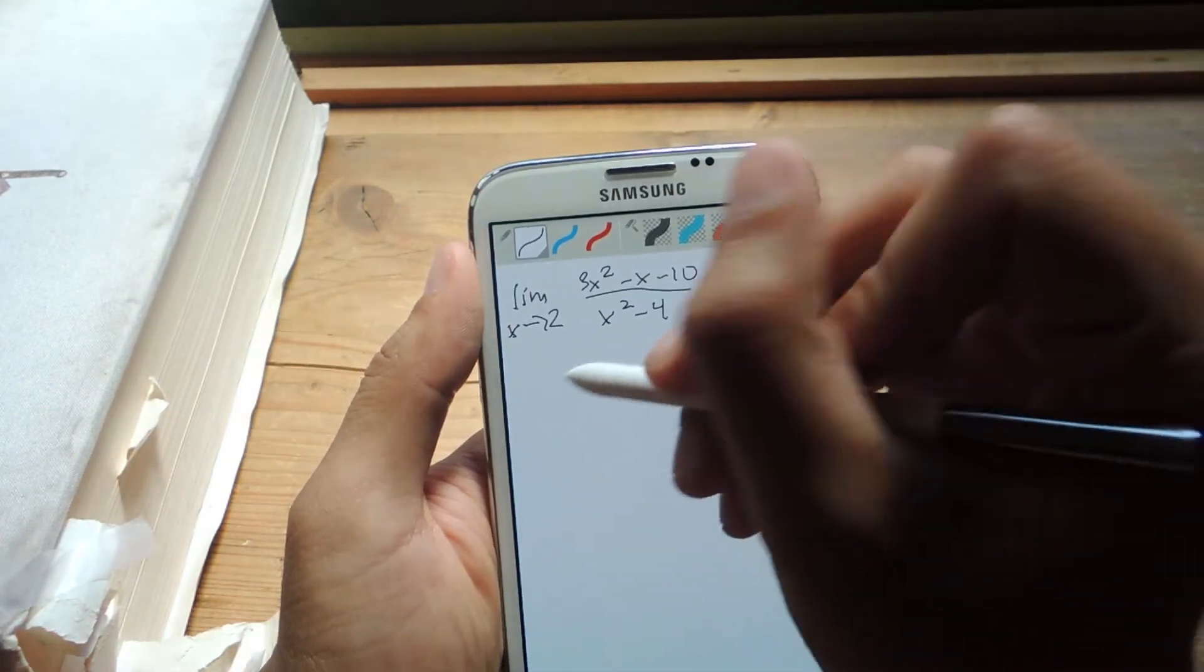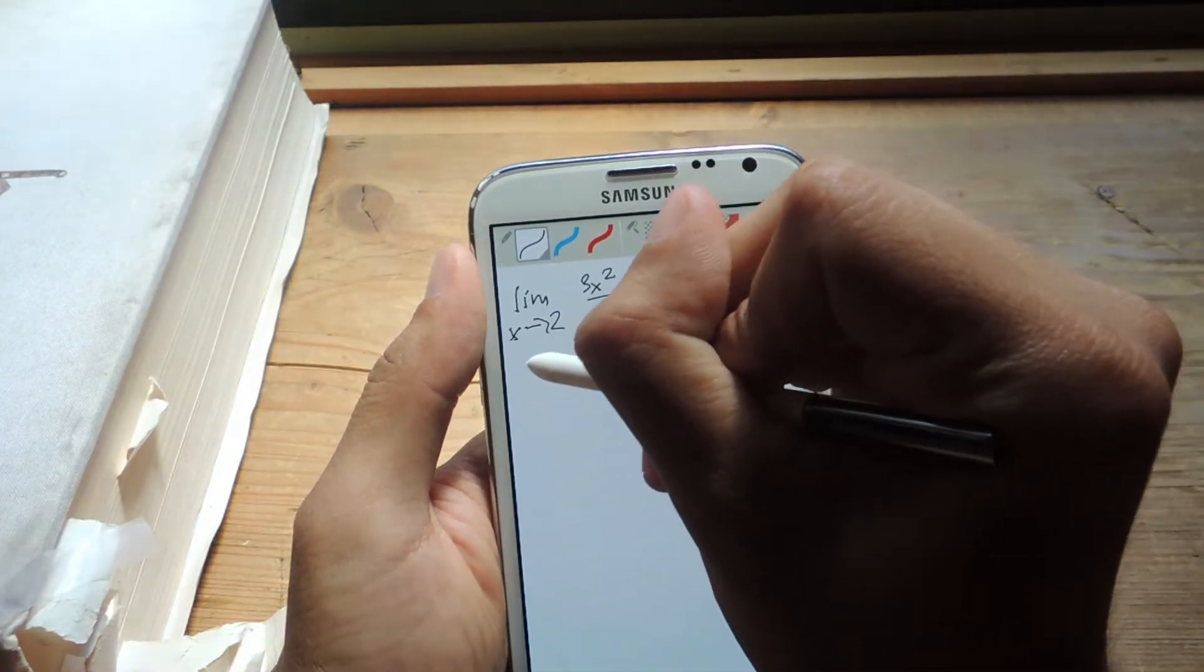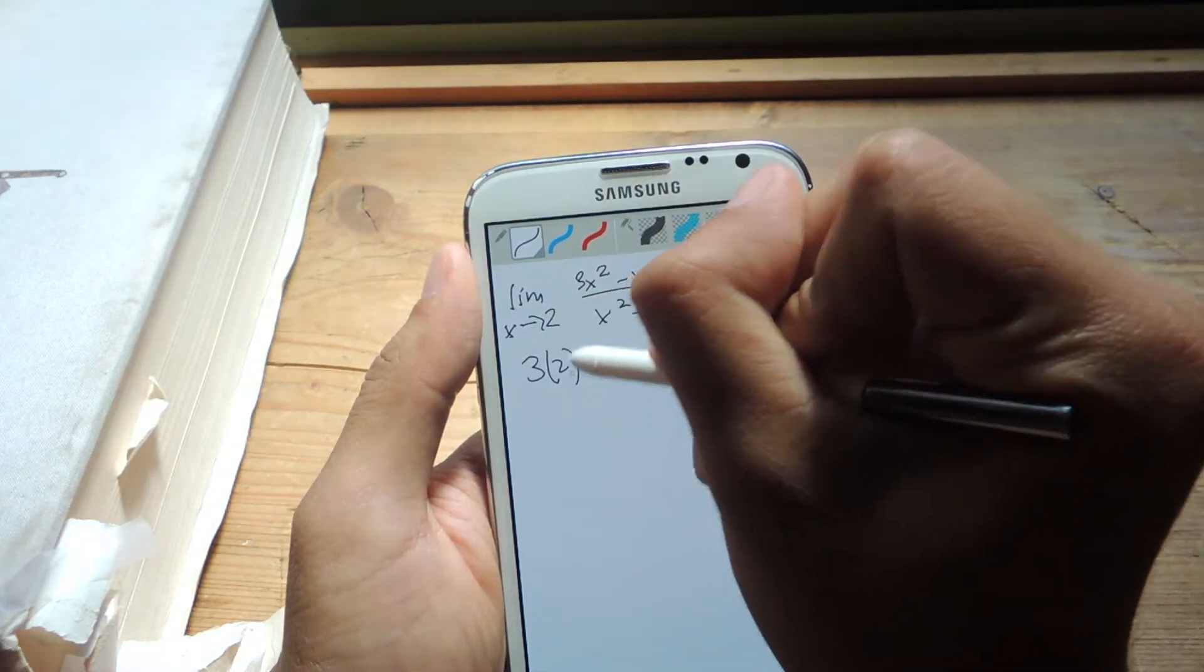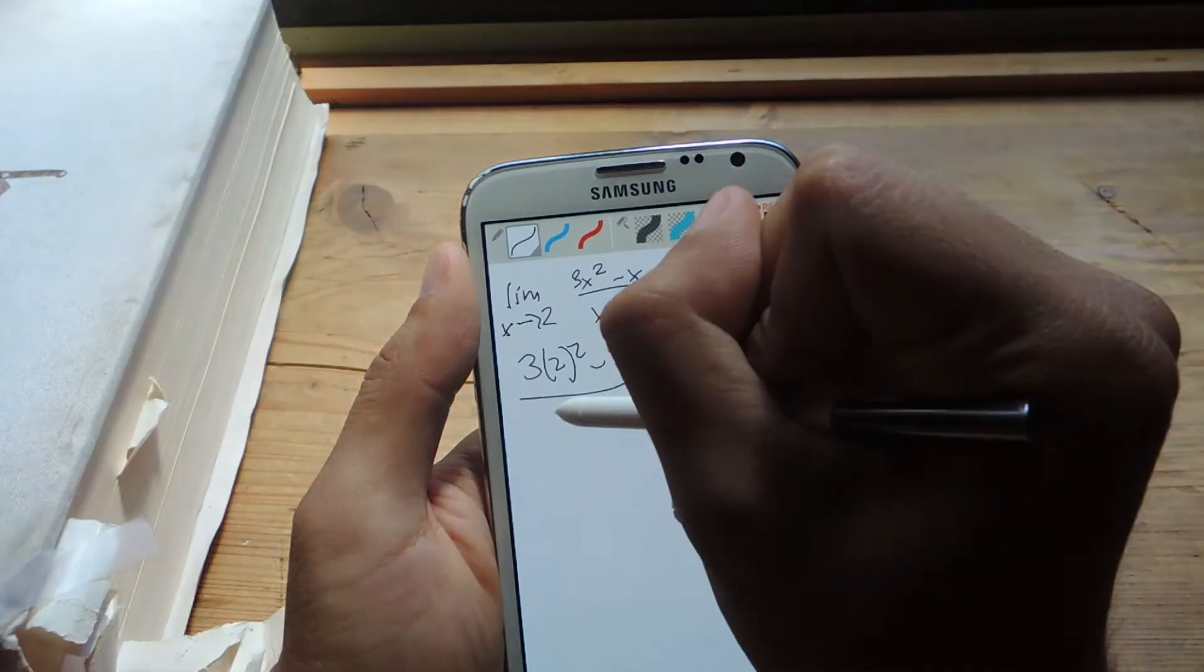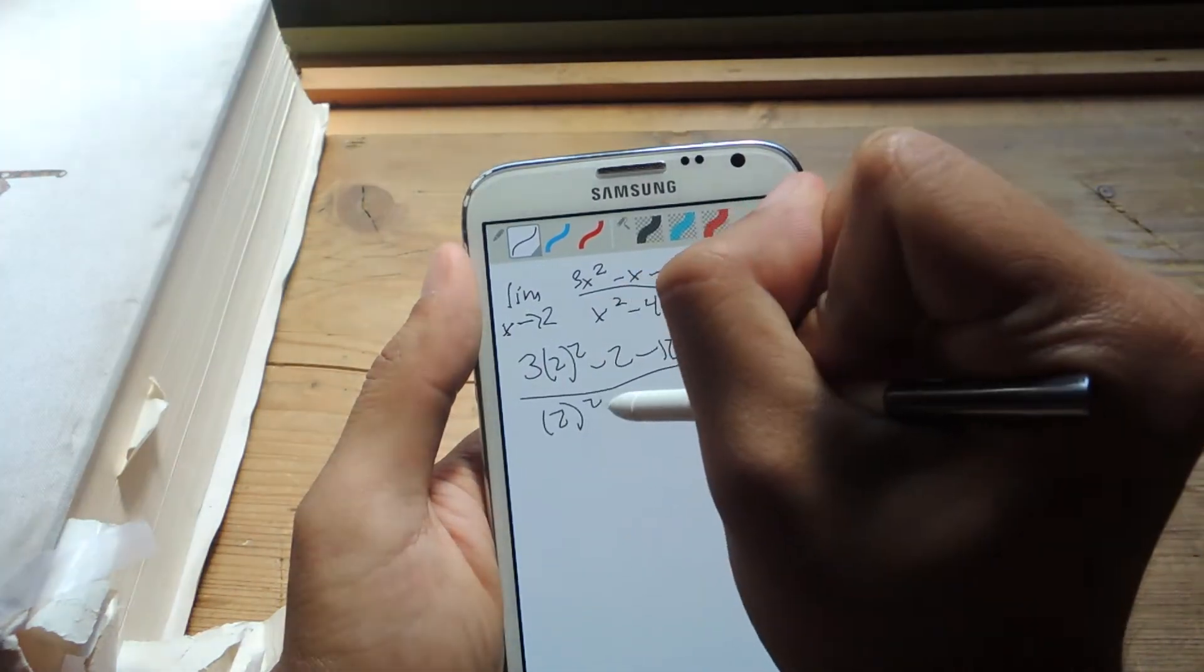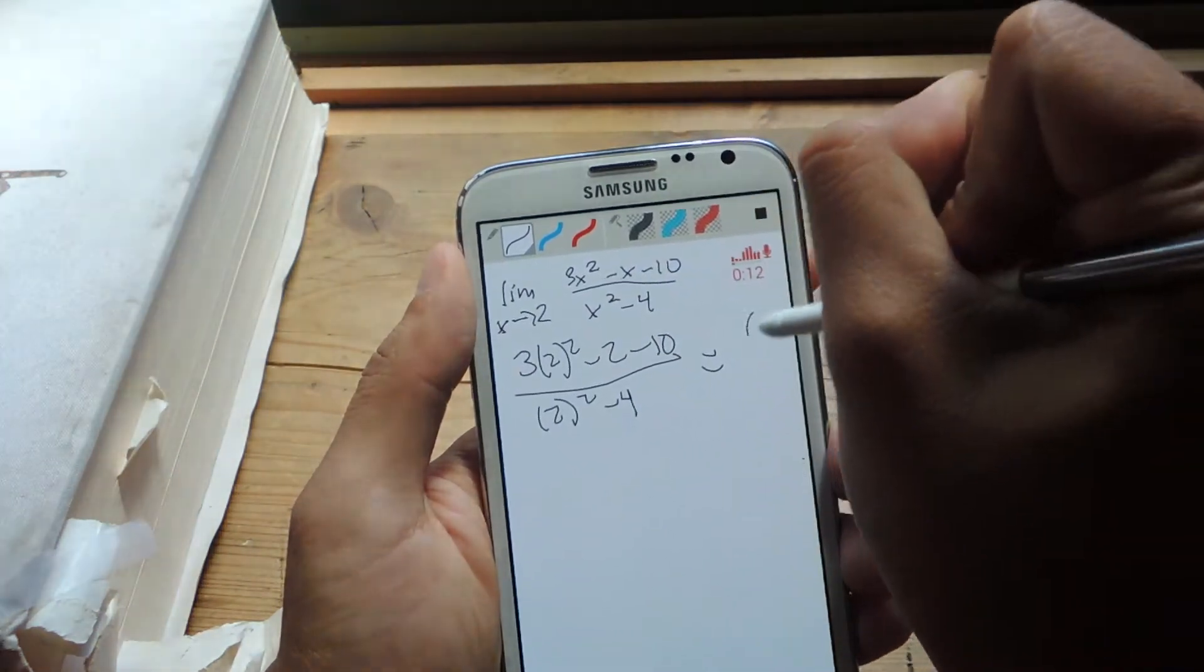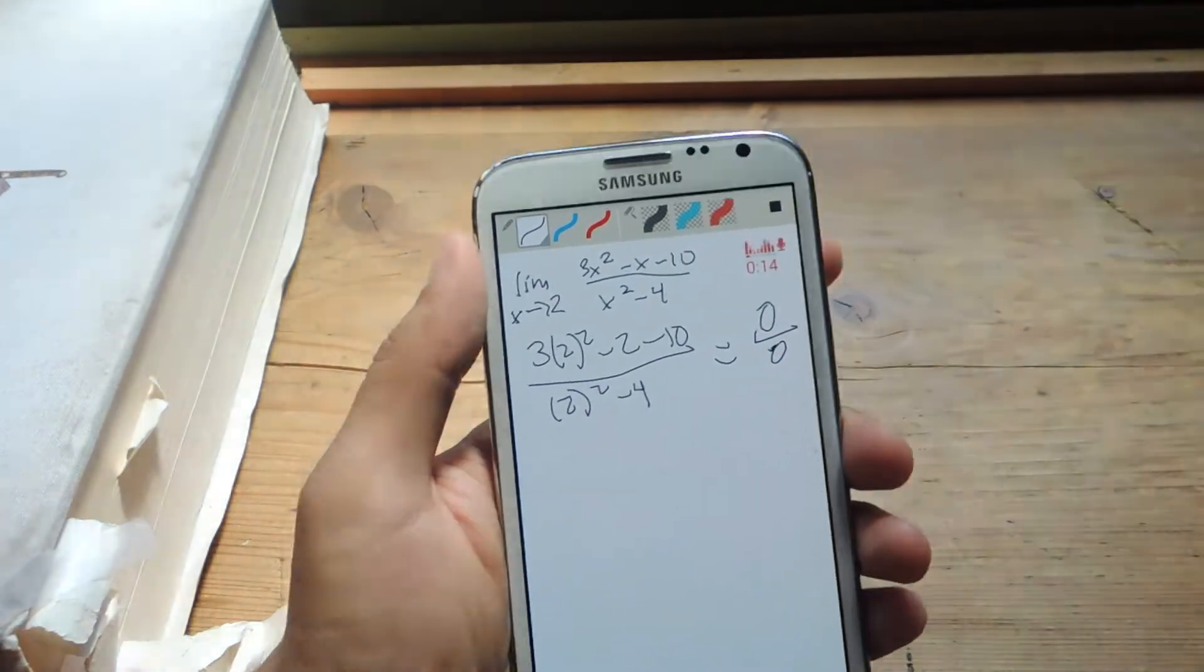Okay, so the first thing you need to do is plug in the 2 into the x's. So I'm going to plug in 2, minus 2, minus 10, over 2, squared, minus 4. That equals 0 over 0, so we can't have that.